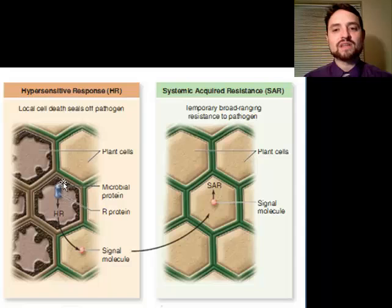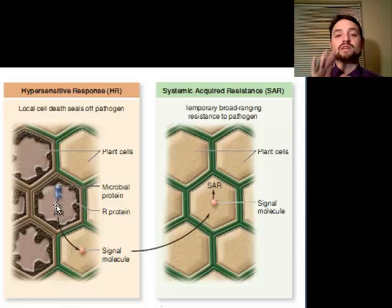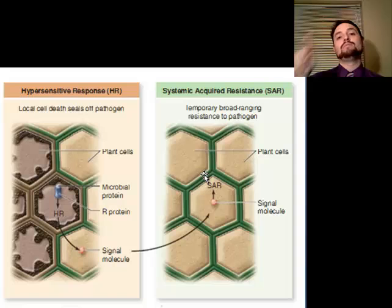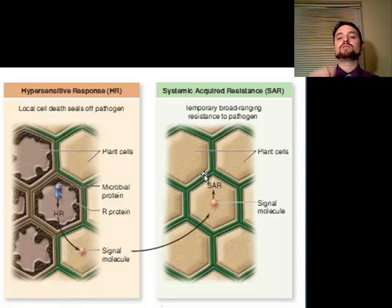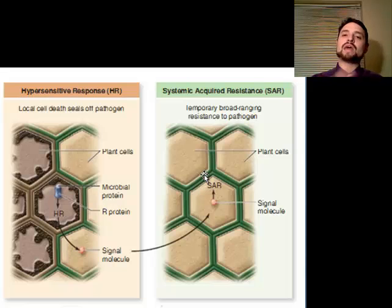In the hypersensitive response, whenever a cell encounters a matching R gene product, it goes into programmed cell death, causing local cell death in several surrounding cells as well — essentially killing off cells to stop the spread. The hypersensitive response also sends out a signal molecule that causes a systemic acquired resistance: a certain area around the infected cell becomes hypersensitive to that pathogen, causing the R gene product to be developed in nearby cells as a temporary, broad-range resistance.